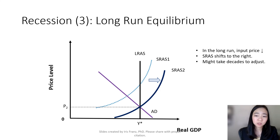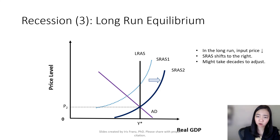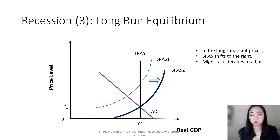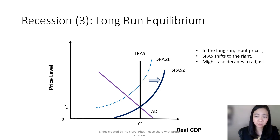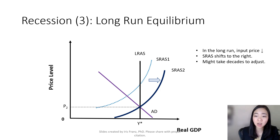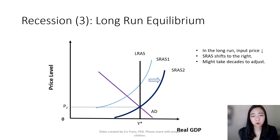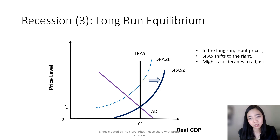Notice that it will take decades to adjust. Why is that? Because during a recession, consumers are not buying goods or services, and therefore firms are not able to sell their goods or services. So when firms are not able to sell their goods and services, no matter how low the wage is, firms are not going to hire more workers and they're not going to expand their production. Therefore, it's going to take decades for us to adjust and shift our short-run aggregate supply curve to the right.